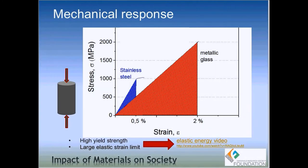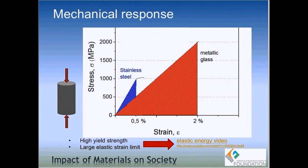In crystalline stainless steel, when stress reaches around 900 to 1000 MPa, the steel starts to deform permanently. The maximum elastic strain achievable in stainless steel is about 0.5%, so if we apply stress higher than 1000 MPa, the shape of the steel cylinder will change permanently. But metallic glasses can withstand much higher stress — almost twice that of steel — and the elastic strain is almost four times that of crystalline steel. So they have very high strength and a very high elastic strain limit.